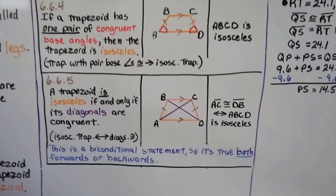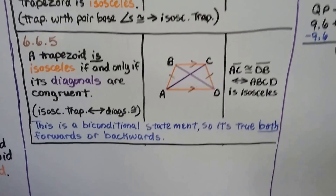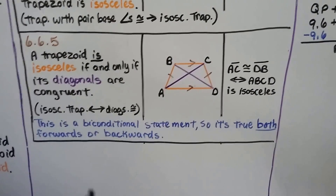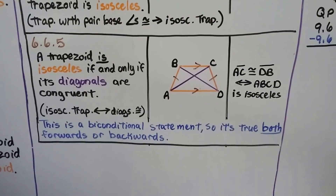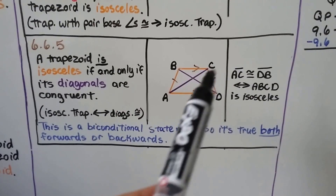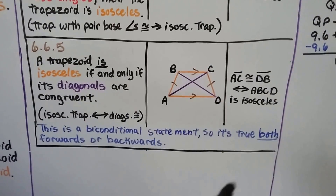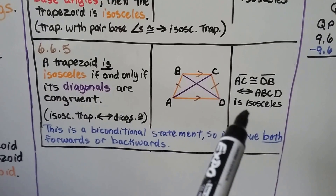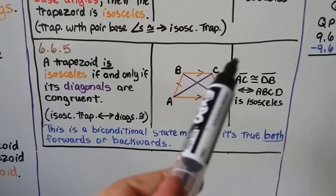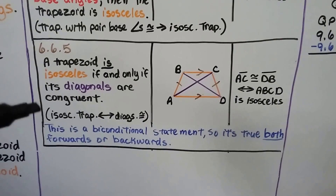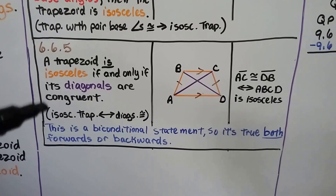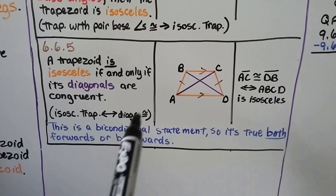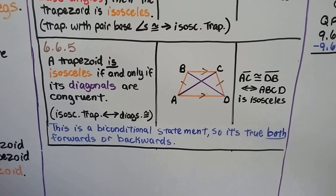Theorem five: a trapezoid is isosceles if and only if its diagonals are congruent. So diagonal AC is congruent to DB, which makes it an isosceles trapezoid — and if it's an isosceles trapezoid, then DB is congruent to AC. This is a biconditional statement, true both forwards and backwards: isosceles trapezoid therefore diagonals congruent, and diagonals congruent therefore isosceles trapezoid.